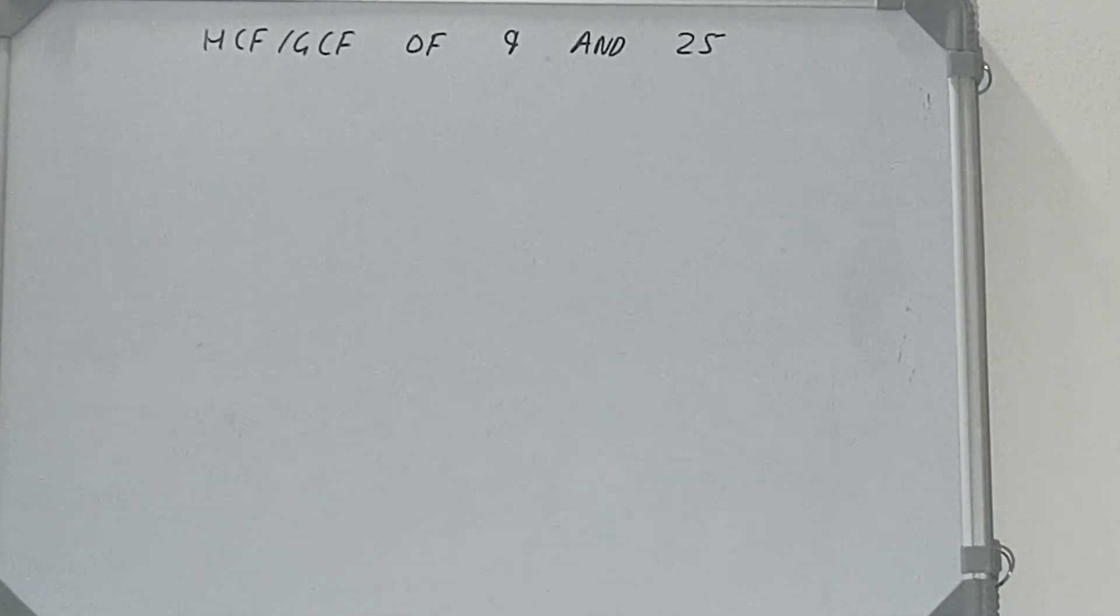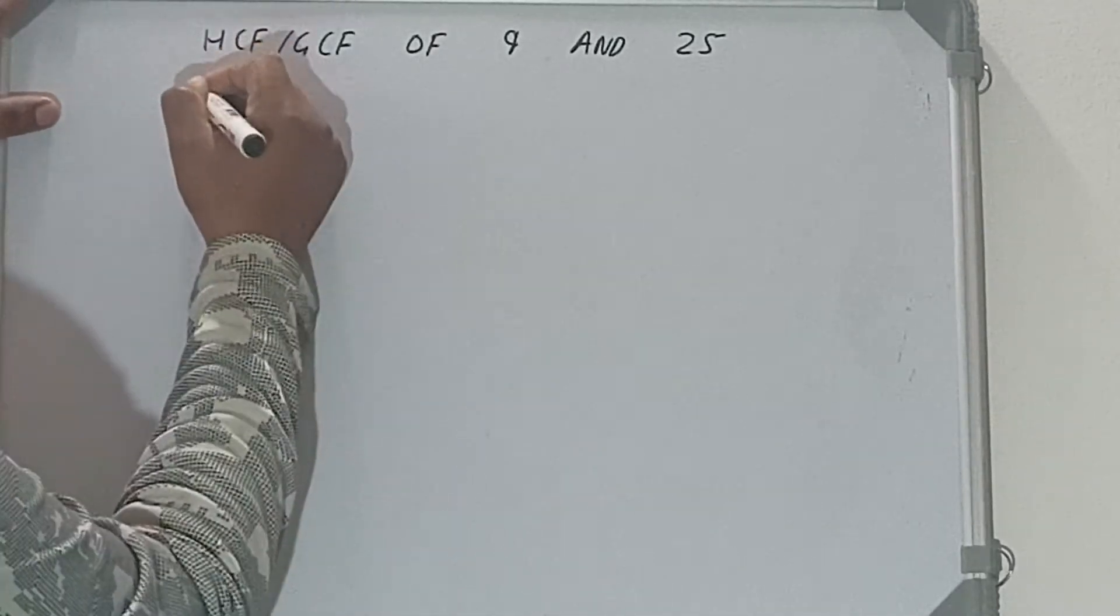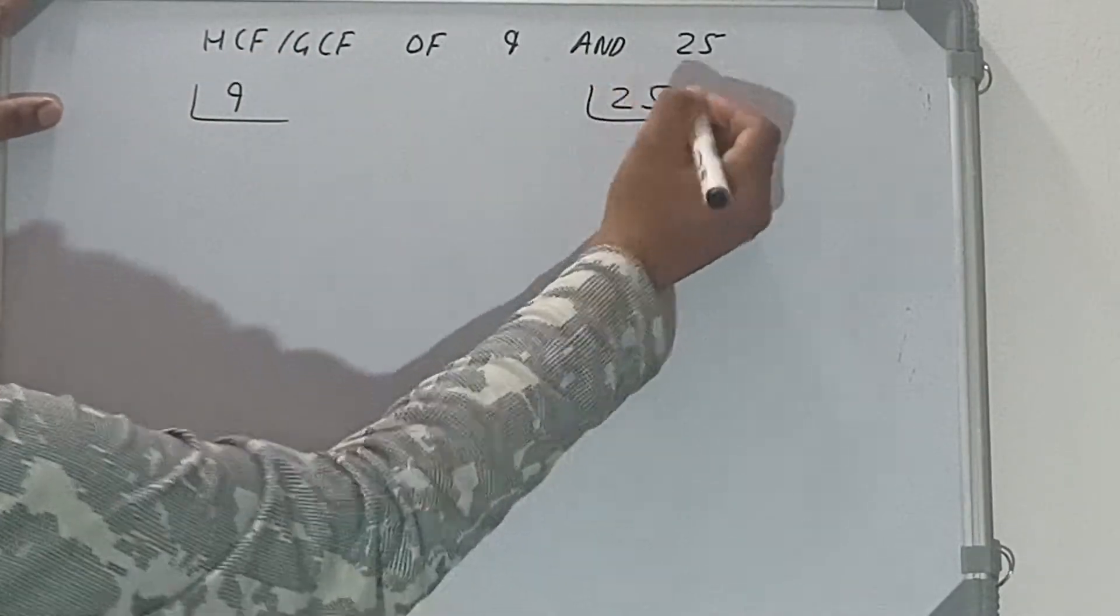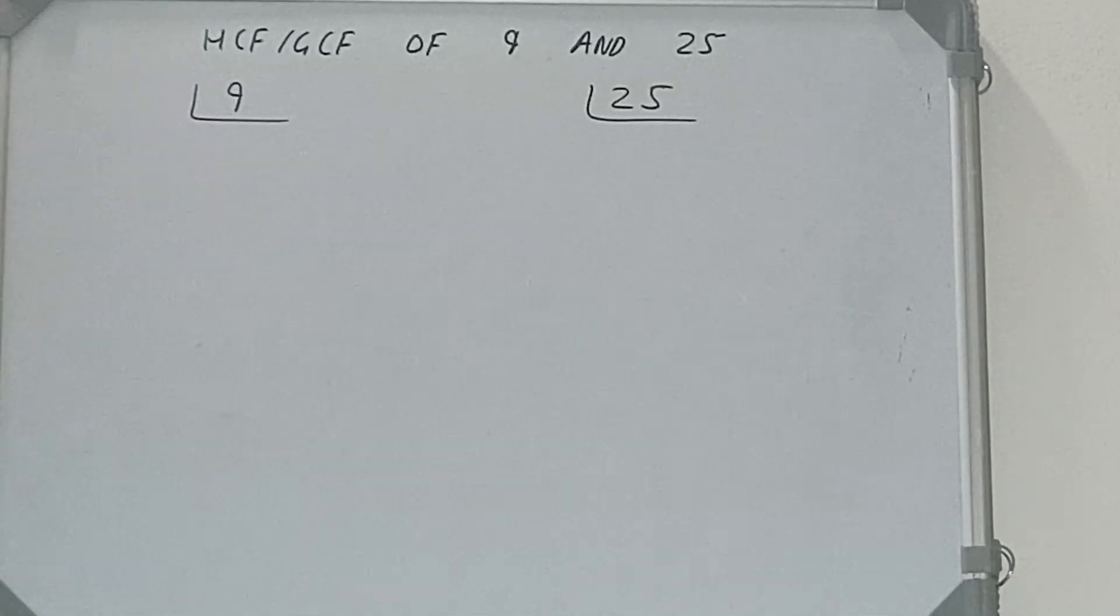Hello friends, and in this video I'll be helping you with the HCF or GCF of the numbers 9 and 25. So let's start. First of all, we need to prime factorize each of the numbers separately. First we'll do 9 and then we'll do 25. Let's start with the number 9.